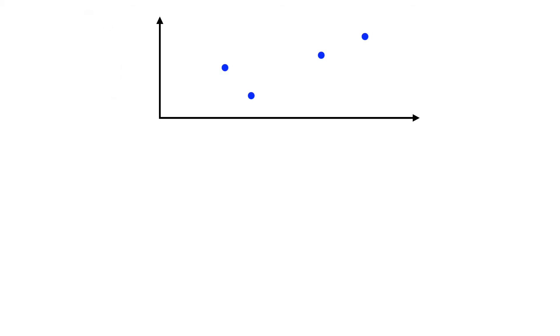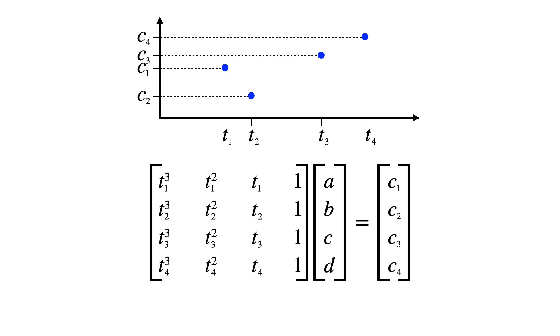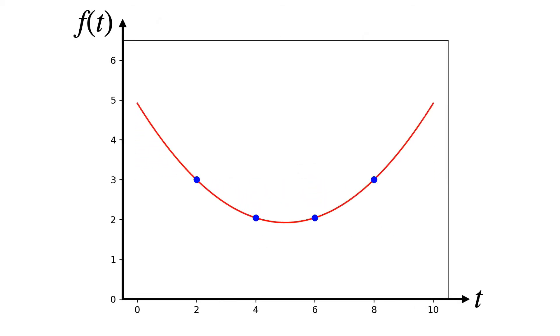This approach works for any control points you choose. If the control points are defined at times t1 through t4, and they take on values of c1 through c4, then the coefficients are found by solving this matrix. Moving these control points around gives you a variety of different shapes.